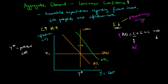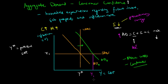In the short run, because of the inertial rate of inflation, businesses cannot change their prices due to menu costs and labor contracts, so they just supply what the market demands. Output moves to Y1. This means there is an expansionary gap between Y-star, the potential output, and the actual output at Y1.